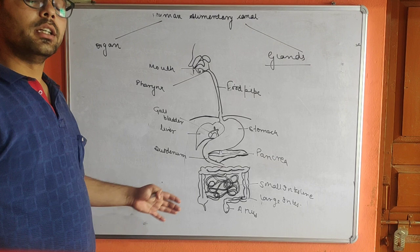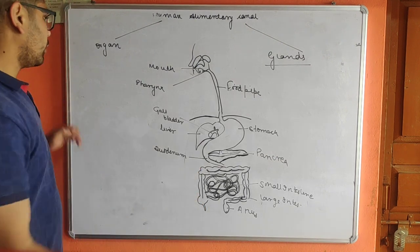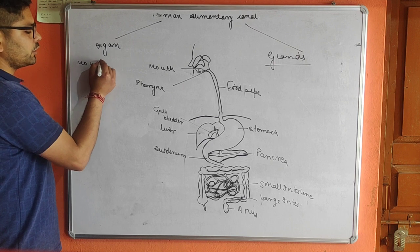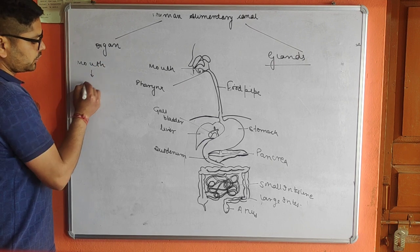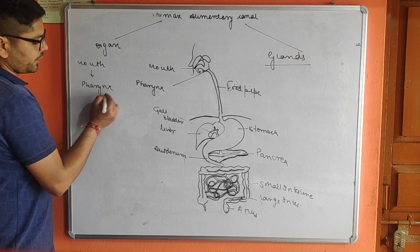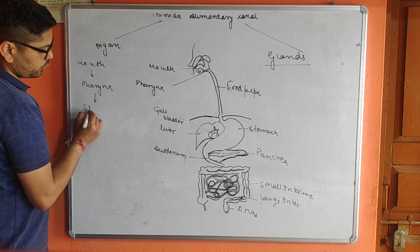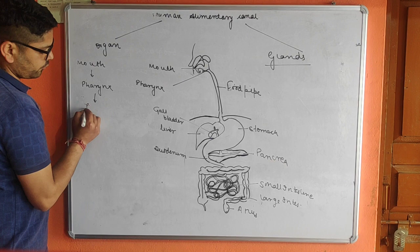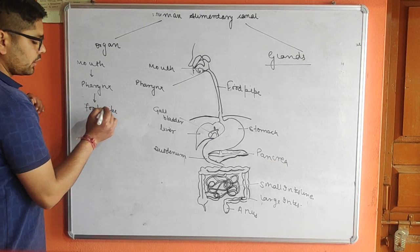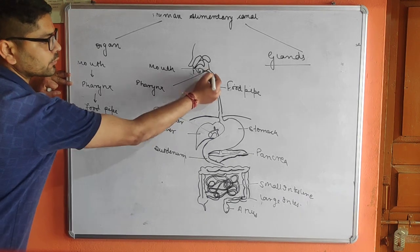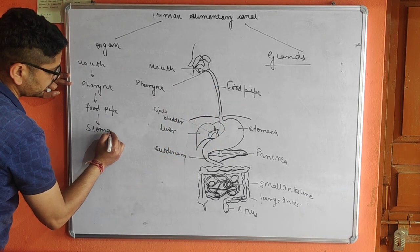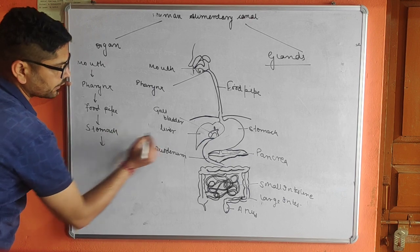This structure is called the large intestine, and finally the large intestine ends at the anus. These are the organs involved in the digestive system. Food enters through the mouth, moves to the pharynx, then to the food pipe, which is the esophagus, and then into the stomach.